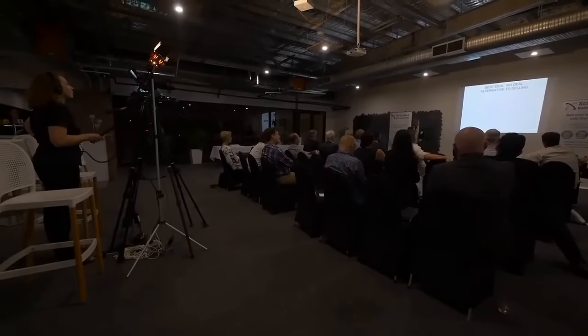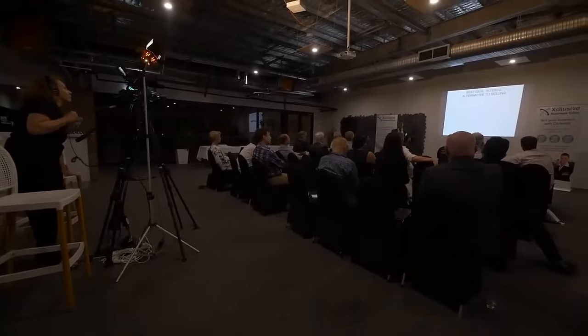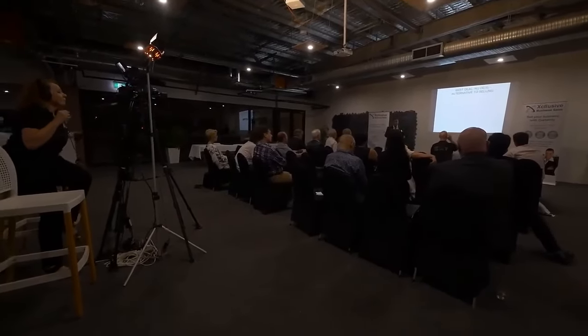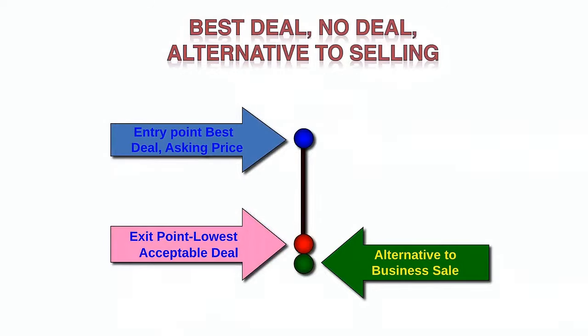Preparing yourself is something no one does. People go to market and selling the business becomes a do-or-die decision — either sell or perish. It happens so many times that your negotiating position is really bad because you don't have an option B. One good way to address this is to start with the asking price — which we'll talk about — and then establish your exit point.